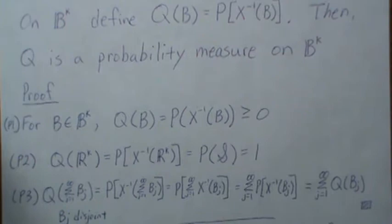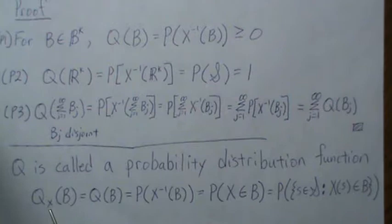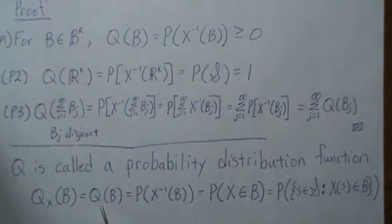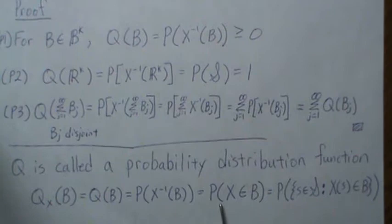Q is called a probability distribution function — and this is the start of probability distribution theory. We write Q_X when we're unsure which random variable we're referring to, and leave the subscript off when it's clear. Really, Q(B) is defined as the probability of the inverse image of B — that's all the elements in our sample space that are mapped to B by our random variable X. It's often written just as the probability that X is in B.